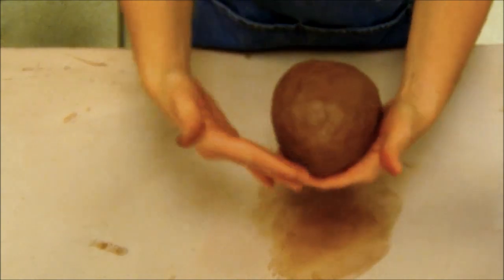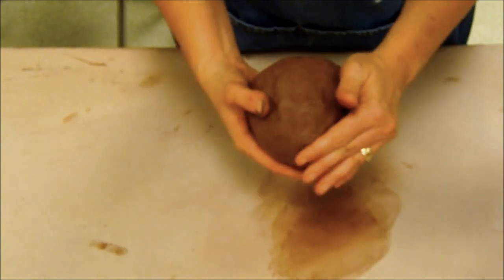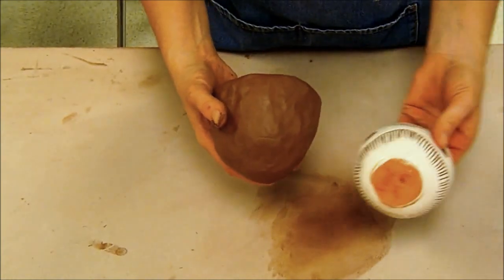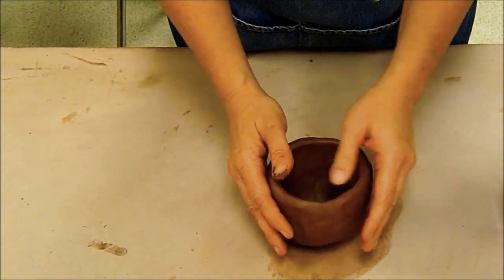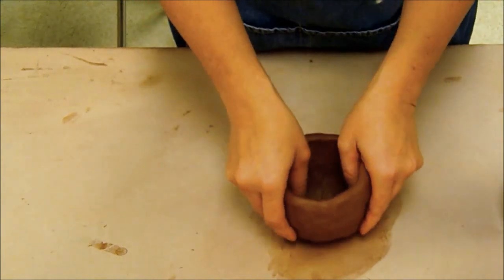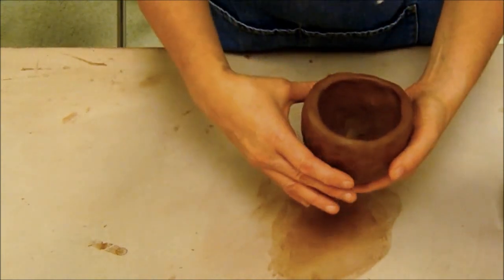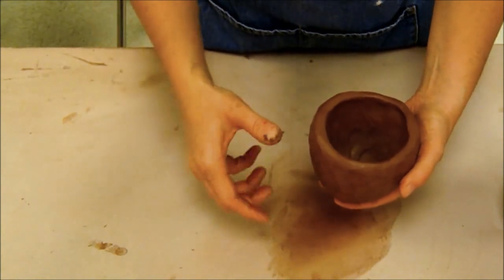Now up to this point I have left it rounded. I have not flattened it out as you see here. The biggest mistake that students make is they do this on the table and if they do it on the table when they pinch usually the form gets really wide and short.